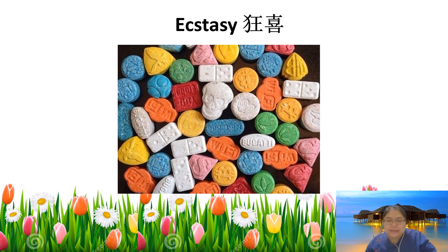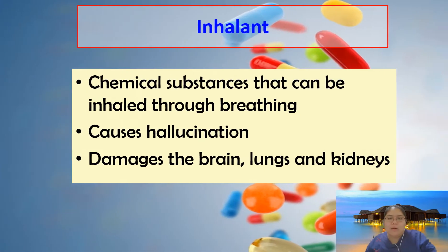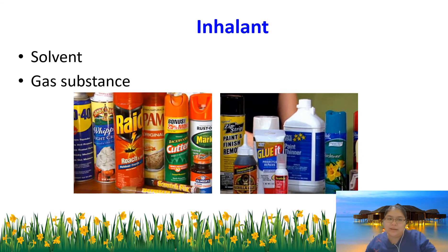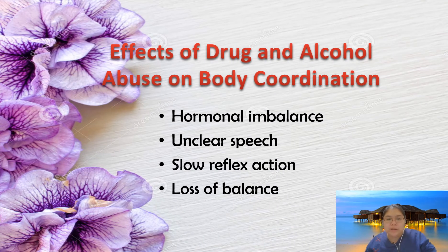The last type is inhalants — chemical substances that are inhaled through breathing. You breathe them in through your nose, and they cause hallucinations and damage the brain, lungs, and kidneys. Inhalants include solvents and certain gases. You breathe them in and they enter your lungs.